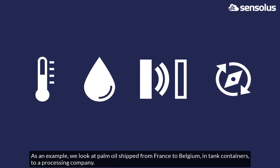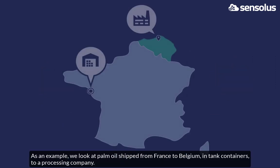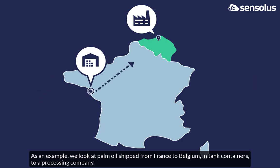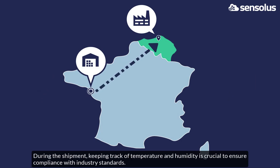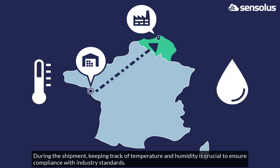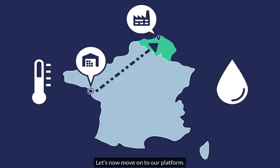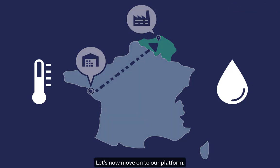As an example, we look at palm oil shipped from France to Belgium in tank containers to a processing company. During the shipment, keeping track of temperature and humidity is crucial to ensure compliance with industry standards. Let's now move on to our platform.